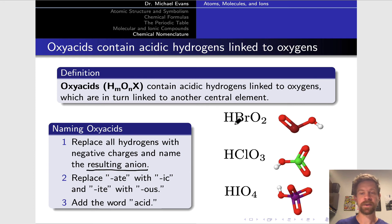So for example, in thinking about HBrO₂, remove the hydrogen and think about BrO₂⁻. What would we call that? We'll come back to that. So HClO₃ - let's replace that H with a negative charge, ClO₃⁻. And then HIO₄ - let's again replace that H with a negative charge, IO₄⁻. If we had two H's, minus two; three H's, minus three, etc.